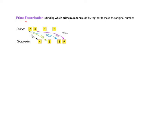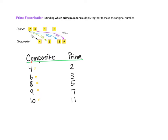Today we're going to review prime factorization. Prime factorization is finding which prime numbers multiply together to make the original number. Let's take a look at this little chart — composite numbers are listed here, and prime numbers are listed here.